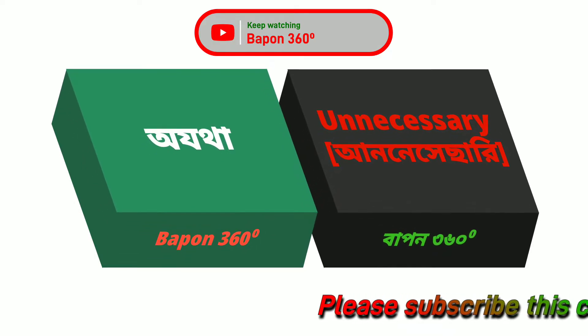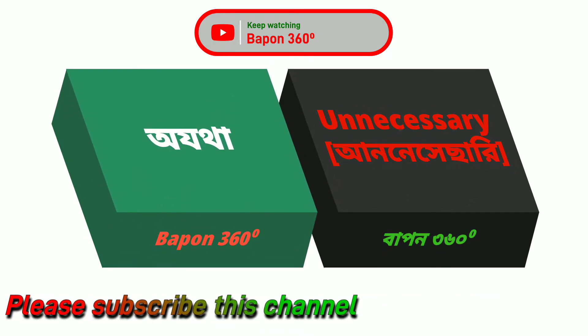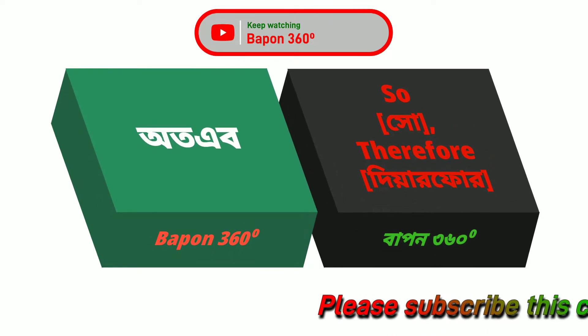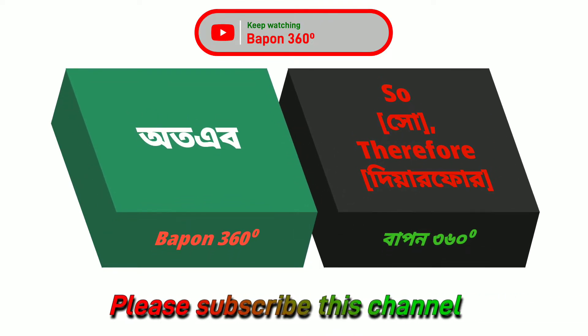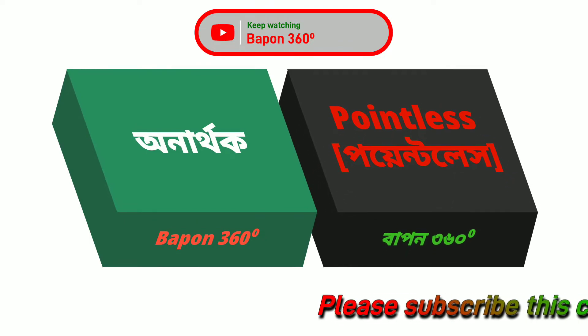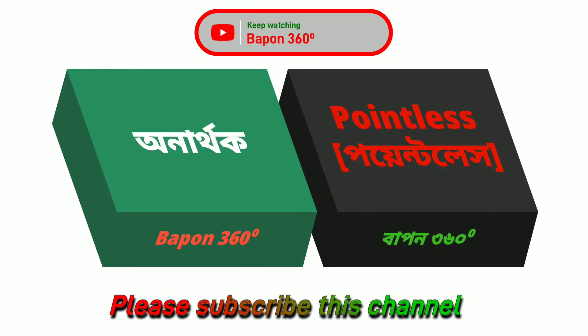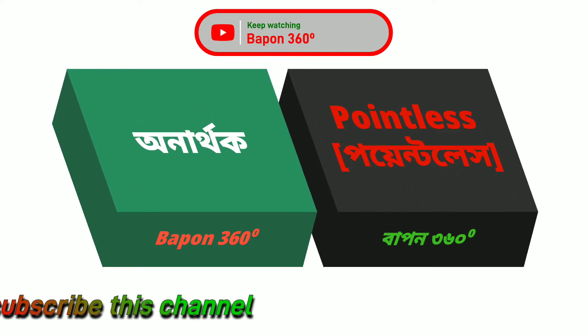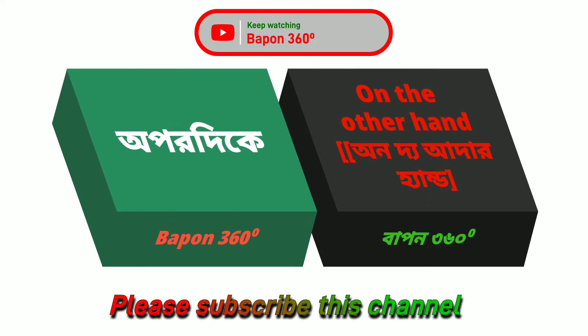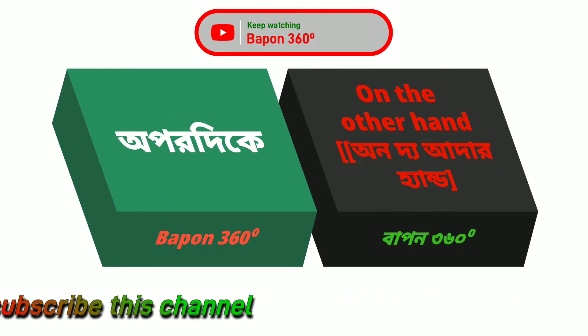Ajothā — unnecessary, arthat ajothā. Atoev — therefore, sabder artho atoev. Anarthop — pointless, sabder artho anarthop. Apurdike — on the other hand, arthat apurdike.